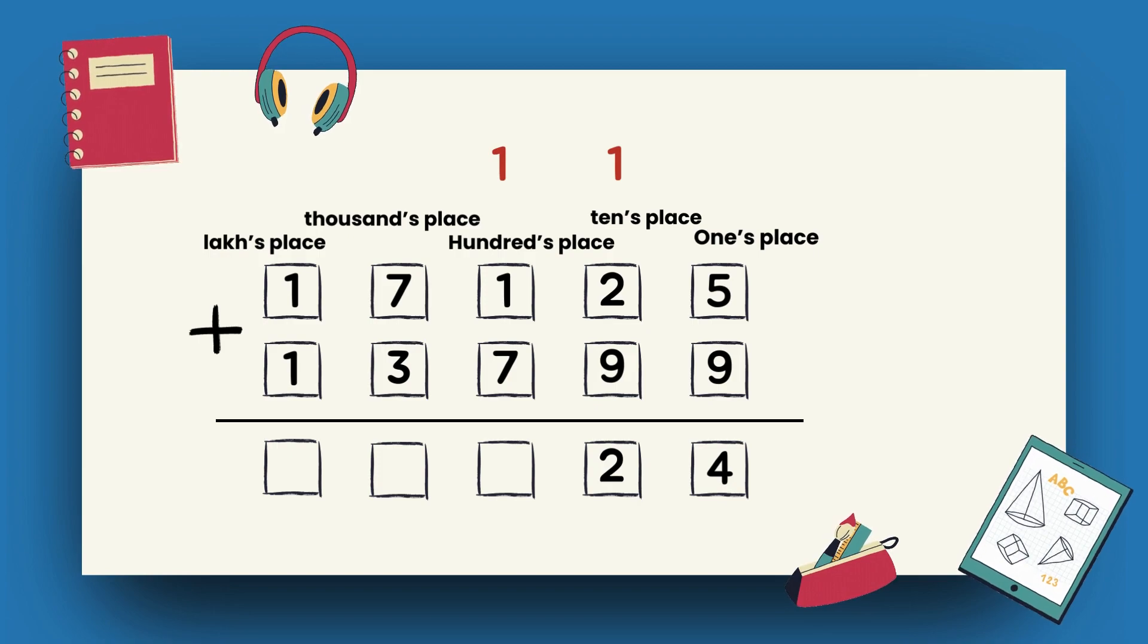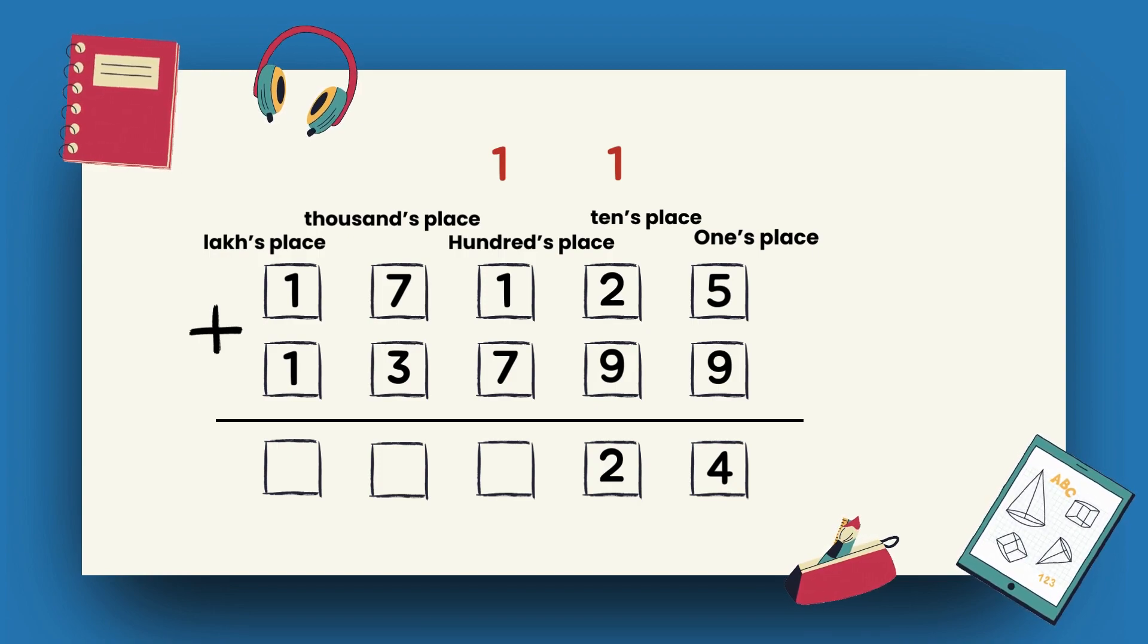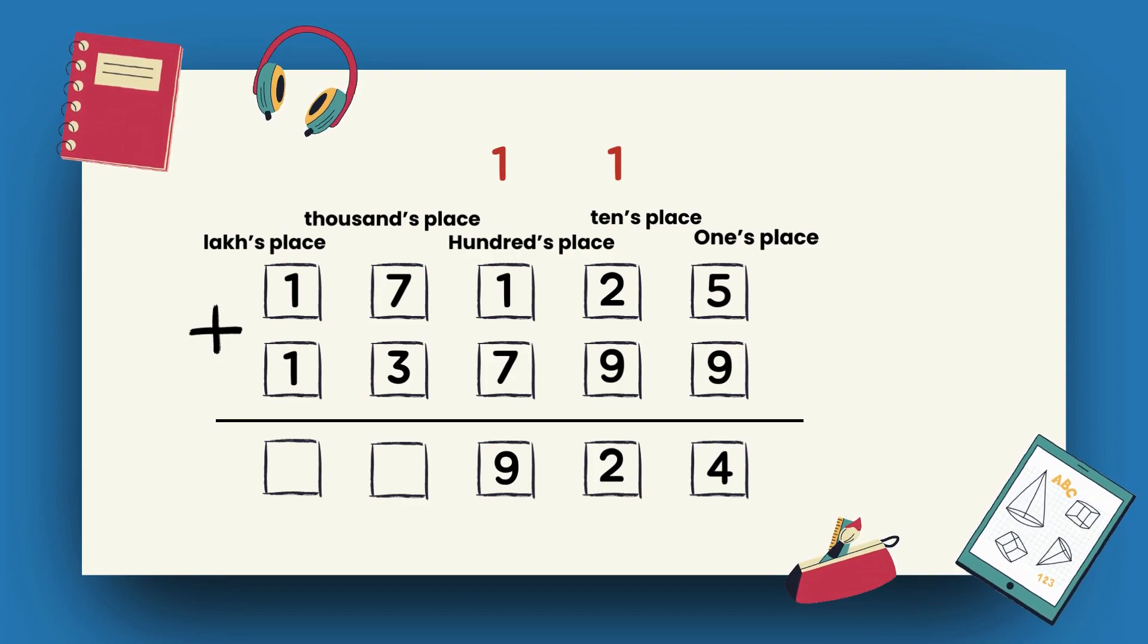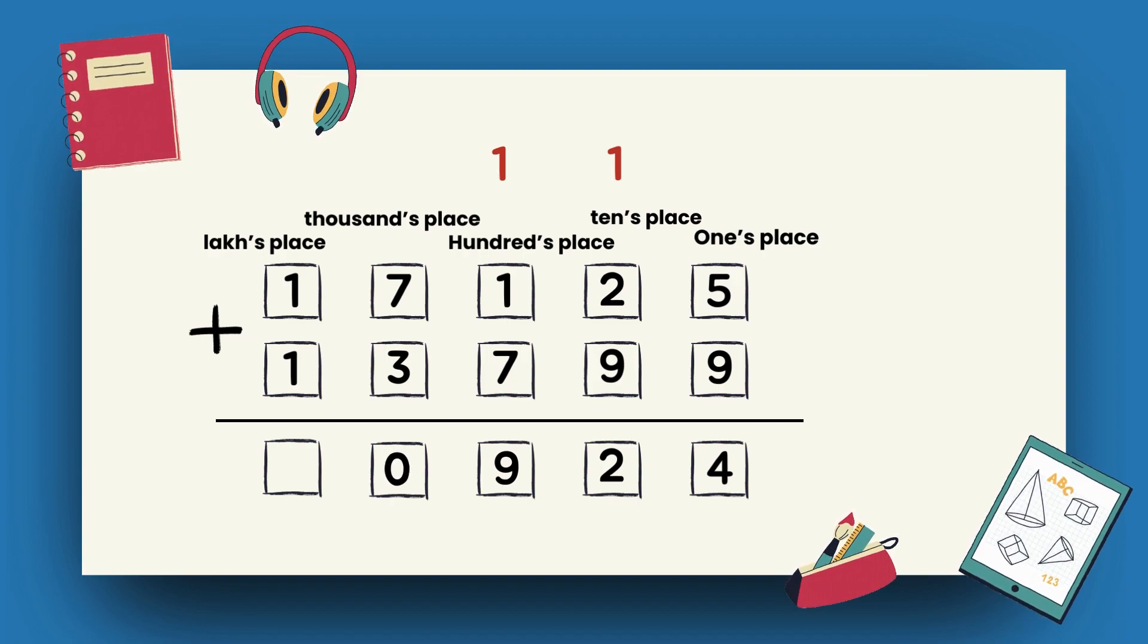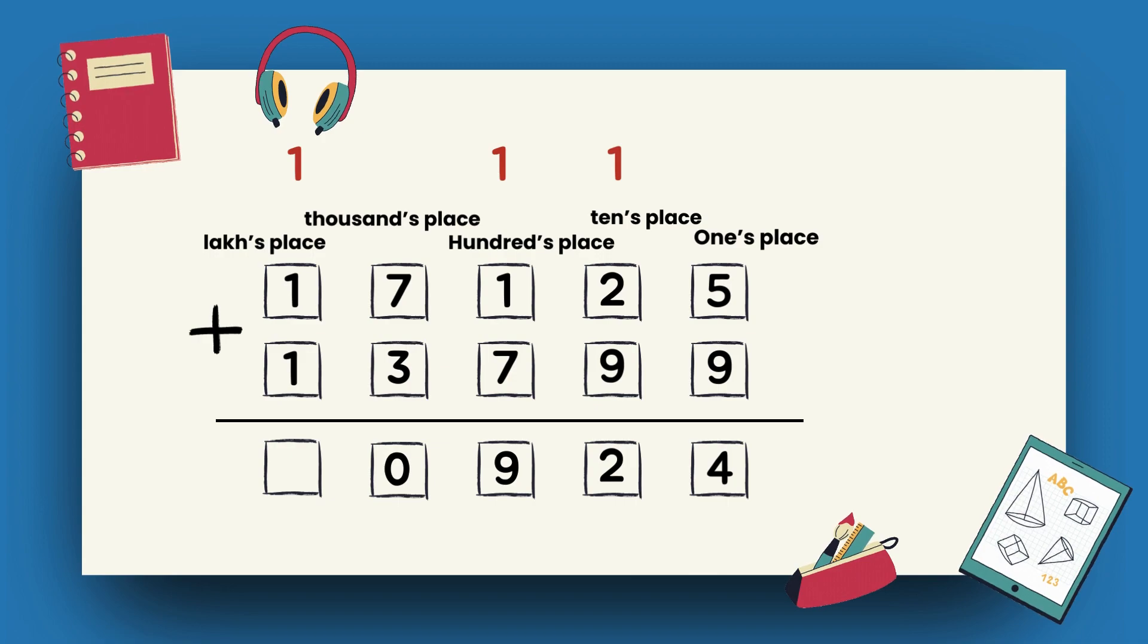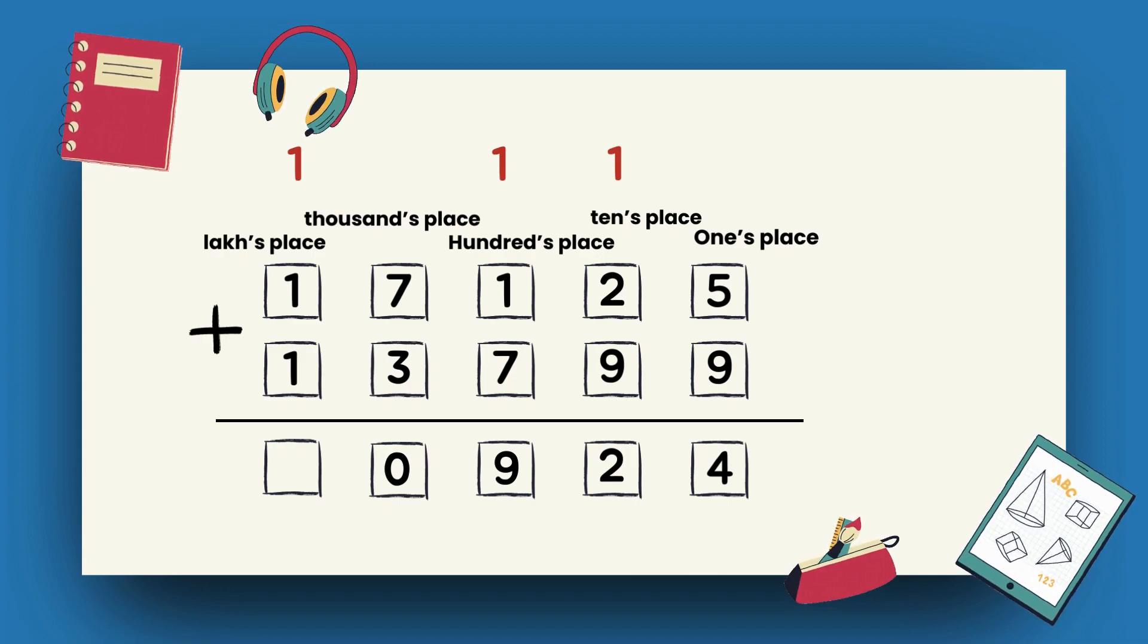Now, moving to 100's place, 1 plus 7 plus 1 becomes 9. For 1000's place, 7 plus 3 becomes 10. 0 comes at 1000's place and 1 goes to carry. Now, for lakh's place, 1 plus 1 plus 1 becomes 3.